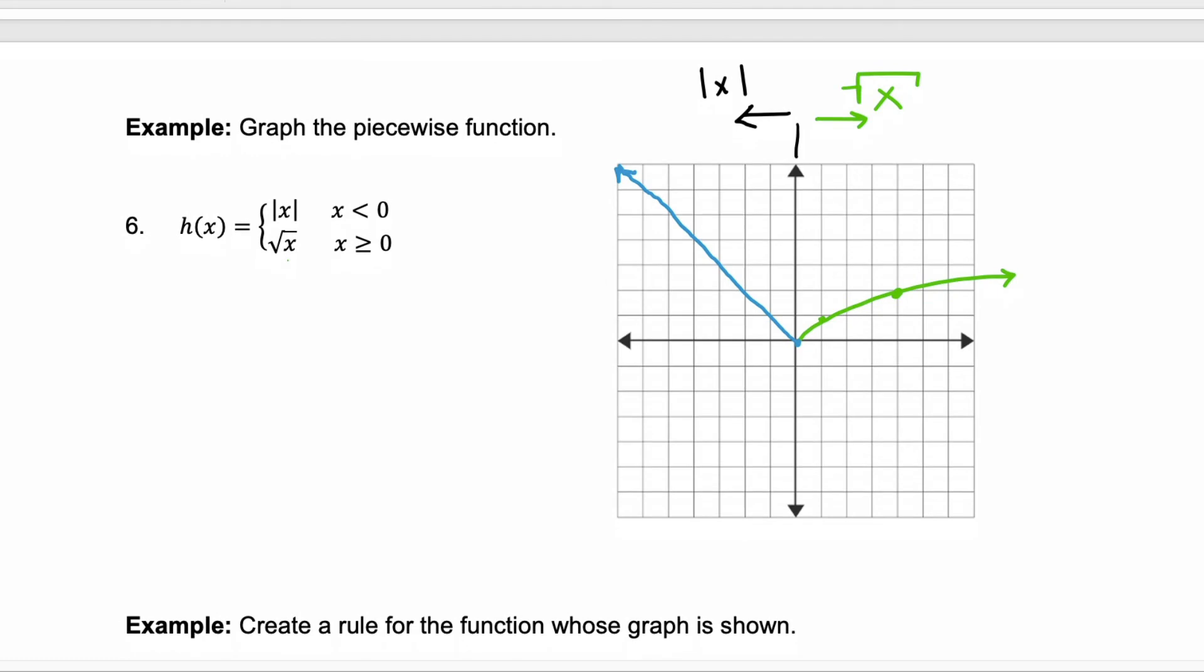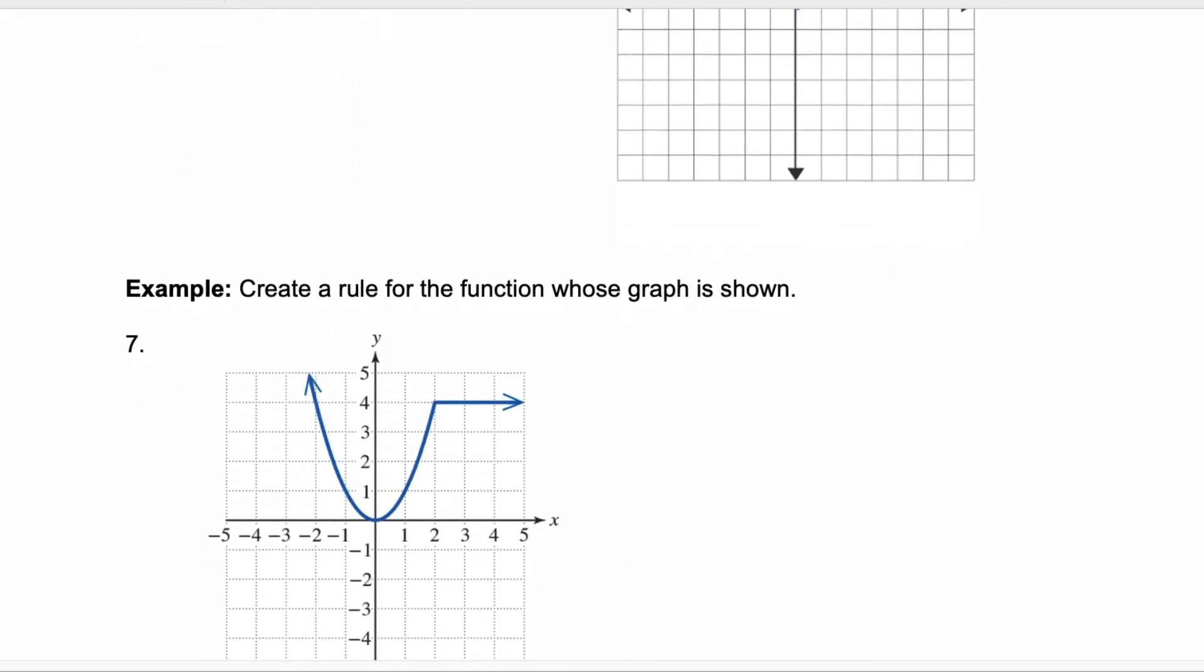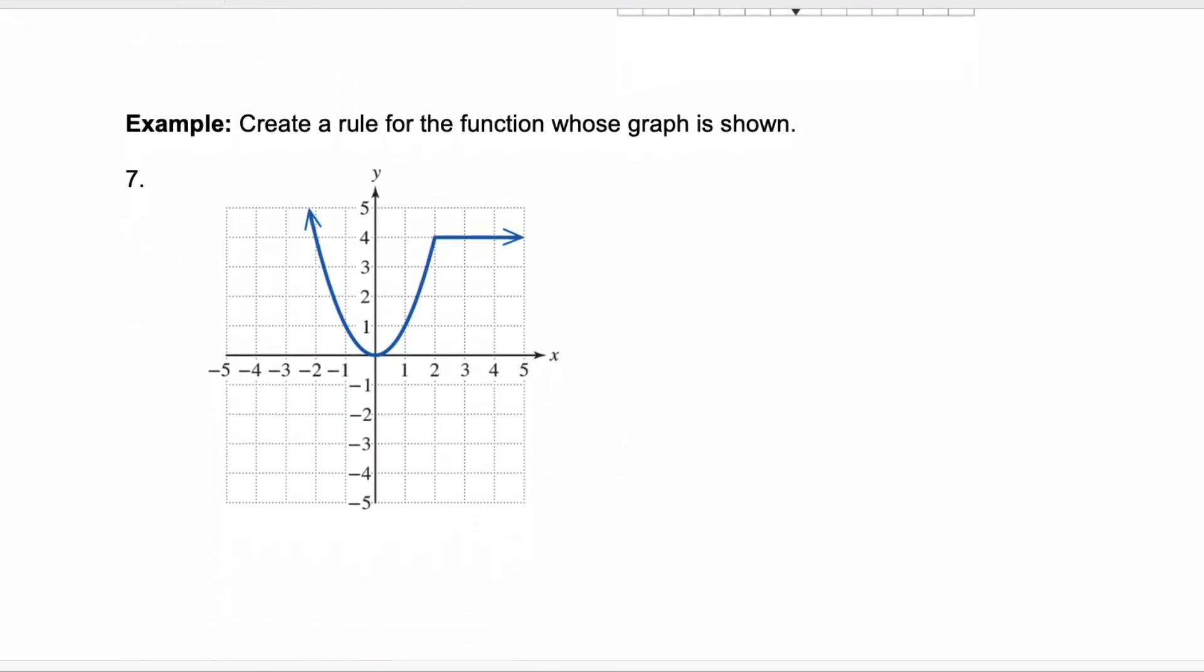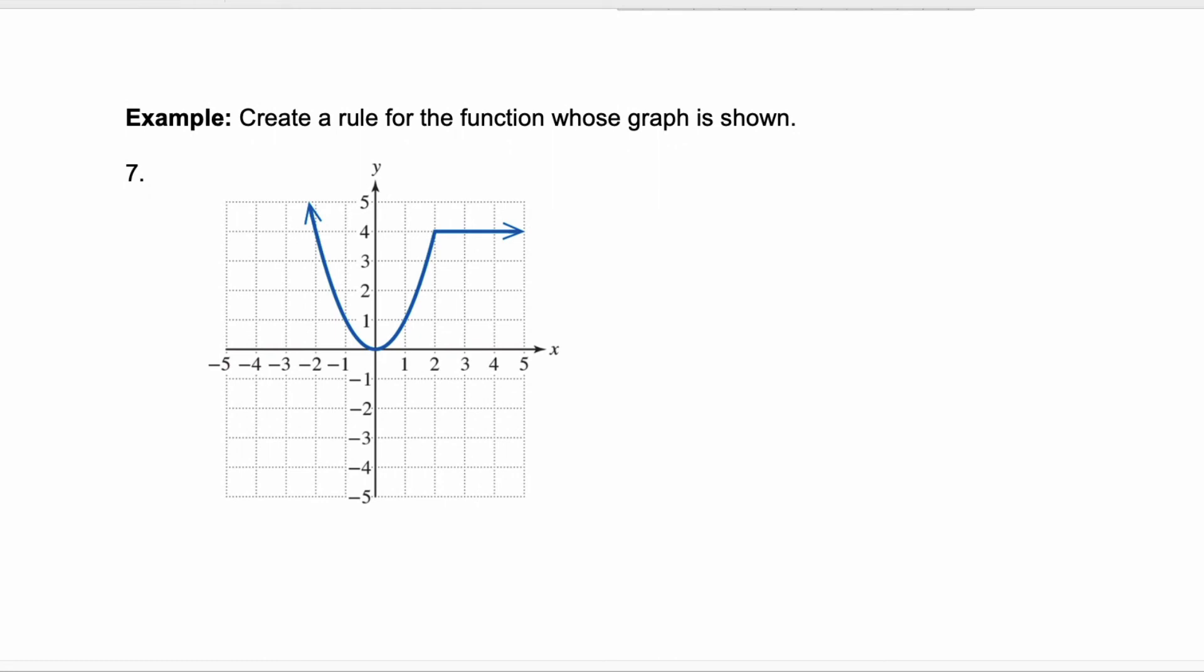Now what about going in the opposite direction? So in example 7 you need to create a rule for the function whose graph is shown. So this is a piecewise function. Think back to those mother functions and what do you see here? Well this first part, let me color it in red, right here, that's the x squared or the squaring function. Right? It's a parabola.